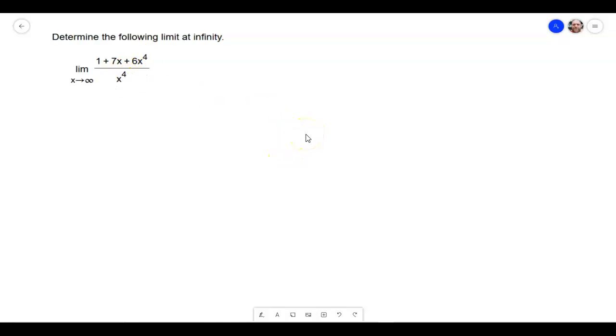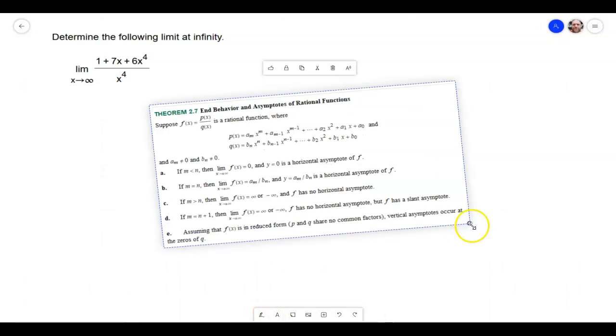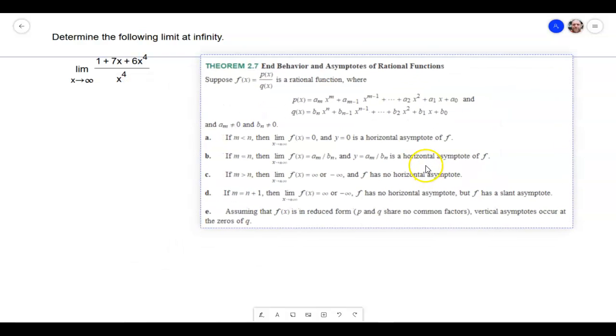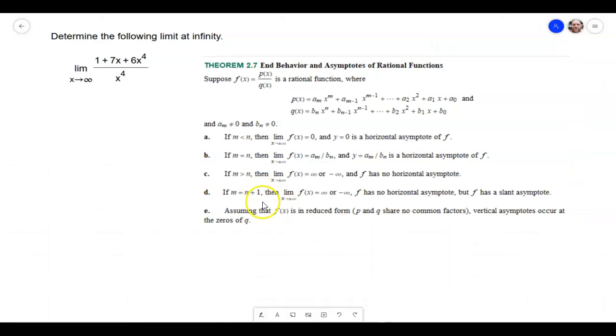We're going to really have three different cases. We're going to have where the exponent on the top is the highest, when the exponent on the bottom is the highest, or when they're equal like this problem is right here. And here is kind of a little rules guide. This is on page 97 in the book.